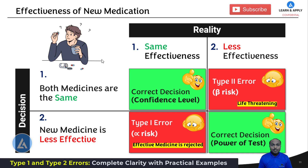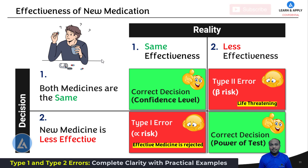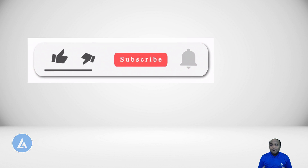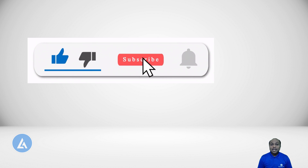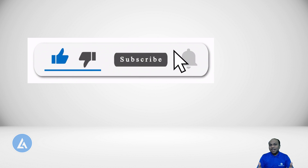With this third example, I am sure that you now have 100% clarity about type 1 error, type 2 error, confidence level, and power of the test. Let's see another important topic in the next video. If you found this information useful, please do not forget to like, comment, and subscribe.